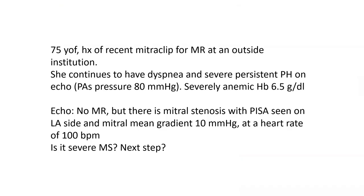This is another case — mitral disease. This is a 75-year-old female with a history of recent MitraClip for MR at an outside institution. She continues to have dyspnea and severe persistent pulmonary hypertension on echo with PA pressure in the 80s. She is also severely anemic with a hemoglobin of 6.5. On echo, she has no MR, but there is mitral stenosis with PISA on the LA side and a mitral mean gradient of 10 mmHg at a heart rate of 100 beats per minute. Is it severe MS, and what's the next step? If you look at this picture, is it severe MS or not?